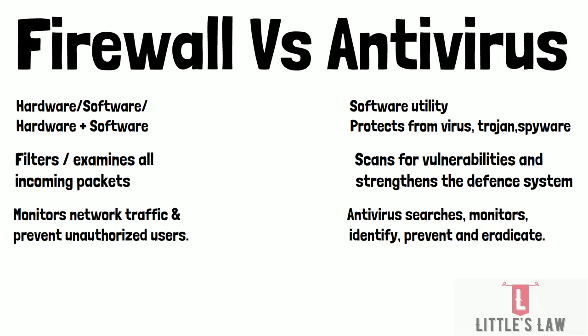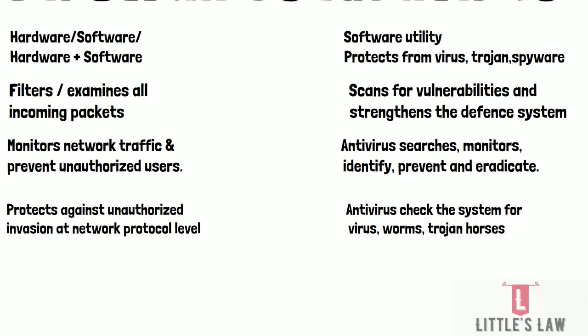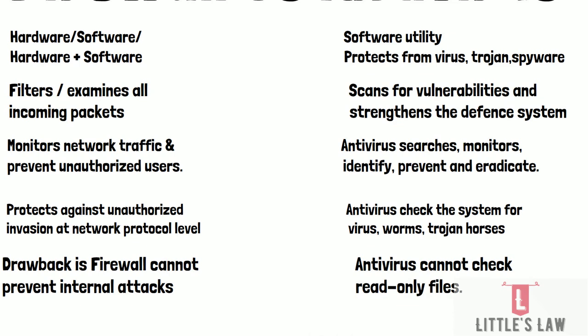When it comes to firewall, it protects against unauthorized invasion at the network protocol level, but the antivirus simply checks the system for potential dangers like viruses, worms, and Trojan horses. One of the firewall's drawbacks is that it cannot prevent internal attacks or attacks that evade its network coverage, while antivirus has the drawback of not being able to check read-only files.